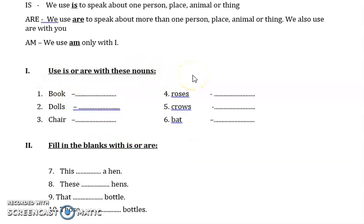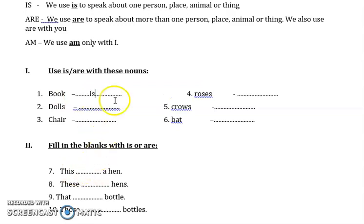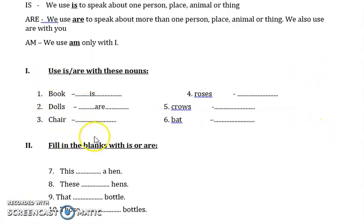I have given a few exercises. Please complete and submit. First one: use is or are with these nouns. If there is only one person, place, animal or thing, we use only is. Here, there is only one book, so the answer is is. Dolls — you have many, so you have to write are. This is how you have to complete this exercise.